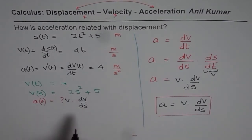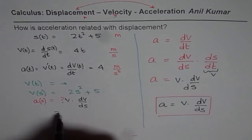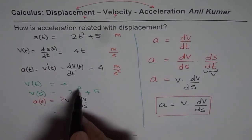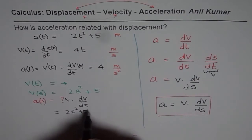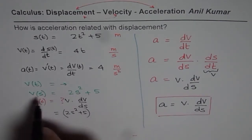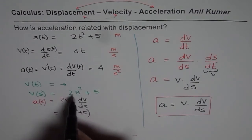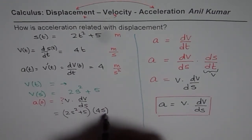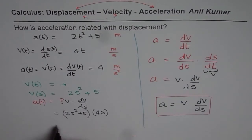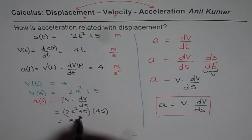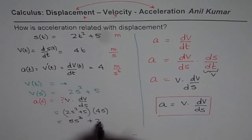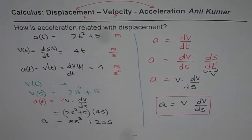So acceleration equals velocity times dv/ds. In this case, velocity is 2s² + 5, and dv/ds is 4s. If I multiply these, I get an expression for acceleration. So acceleration in this case will be (2s² + 5)(4s) = 8s³ + 20s. That is the acceleration as a function of displacement.